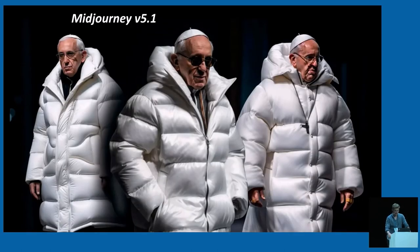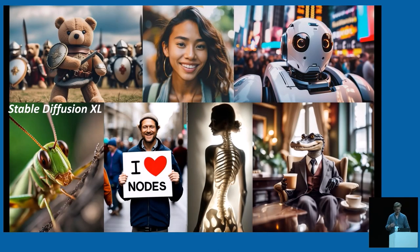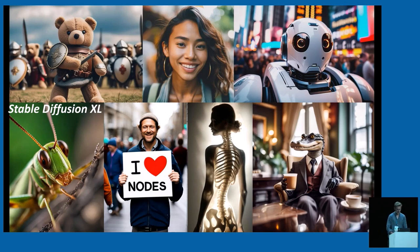Let's have a look at some results from recent generative models for image synthesis. I'm pretty sure that some of you have seen these images of Pope Francis wearing a puffy white coat — these went quite viral a few months ago. These were generated with MidJourney, a commercial text-to-image generative model. Here are some more examples from Stable Diffusion XL, a latent diffusion model that we at Stability published last week. We can now see that it's possible to generate highly complex, high-quality images with a single model, and the boundary between real and artificially generated content is really vanishing.